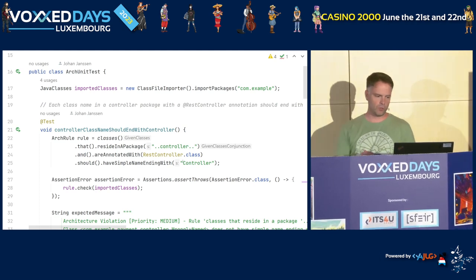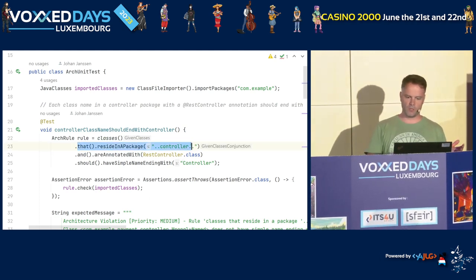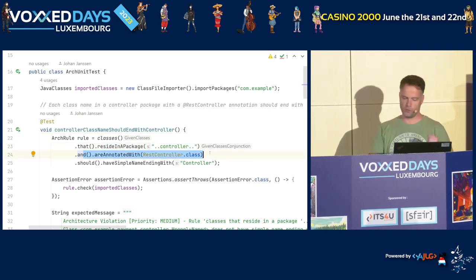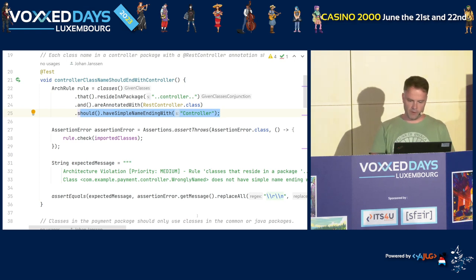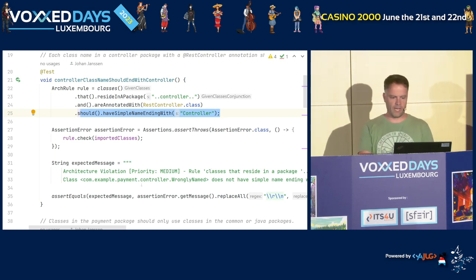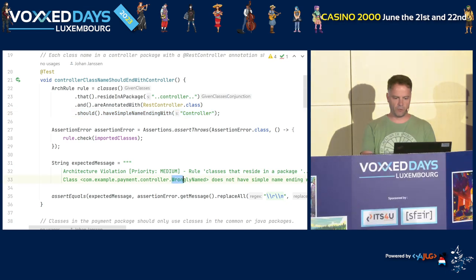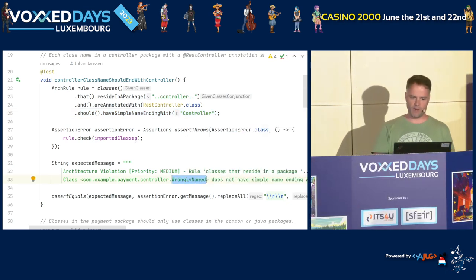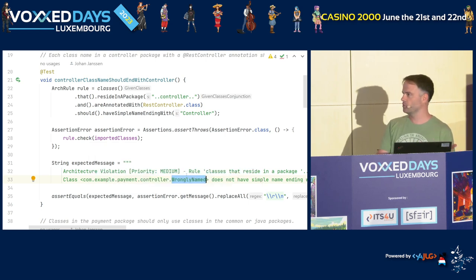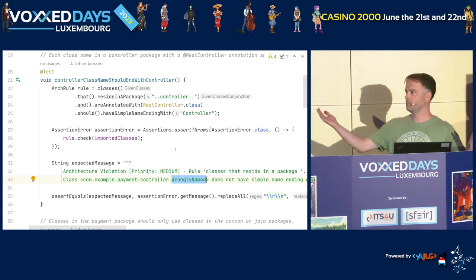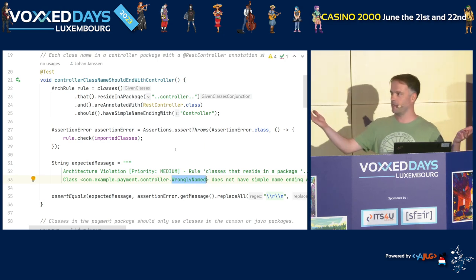You can define some rules, like: all the classes in the controller package which have a RestController annotation — which is often used by Spring Boot — should have a simple name ending in 'Controller'. I made an example that doesn't work: I have one class in the controller package called 'WronglyNamed'. When I check for these rules, I get a message that this class doesn't adhere to them. If I rename it to 'WronglyNamedController', it's perfectly fine and I've fixed my architecture.